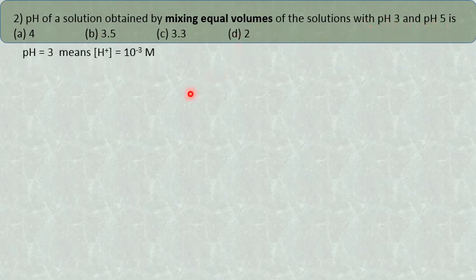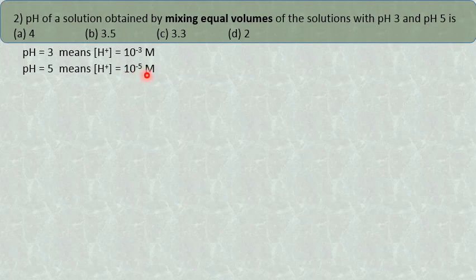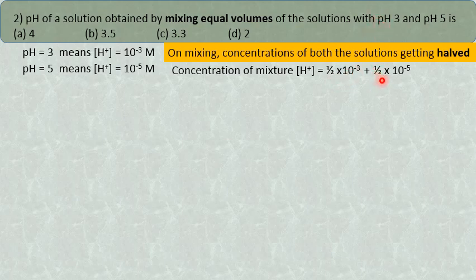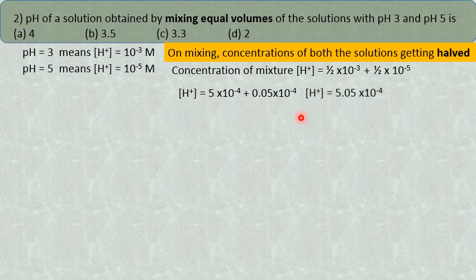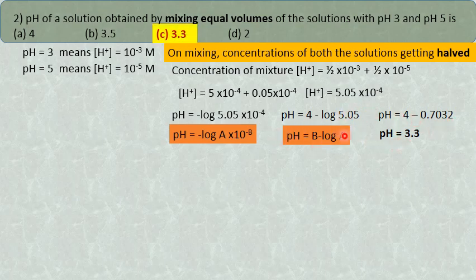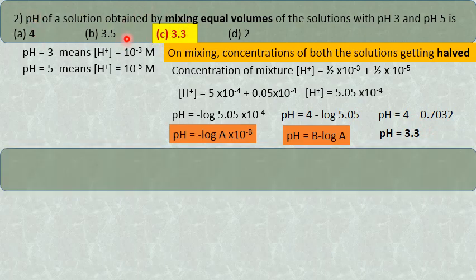So it will get half of it. The pH 3 means hydrogen ion concentration is 10 raise to minus 3 moles, and pH 5 means 10 raise to minus 5 moles. When you mix the two solutions, the concentration of each will get half. So the total hydrogen ion concentration equals half into 10 raise to minus 3, plus half into 10 raise to minus 5. On adding these two, you get 5.05 into 10 raise to minus 4. Taking the pH: negative log of 5.05 into 10 raise to minus 4 equals 4 minus log 5.05, which equals pH 4 minus 0.7032, simplified to 3.33.